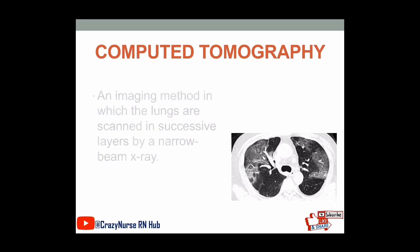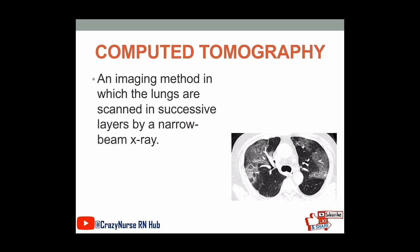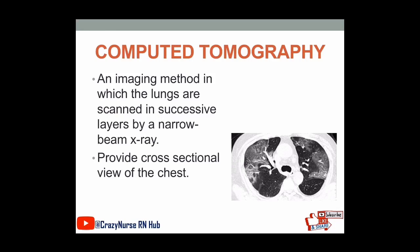Computed tomography is an imaging method in which the lungs are scanned in successive layers by a narrow beam x-ray. It provides a cross-sectional view of the chest, which is more detailed compared to a standard x-ray, allowing the structures of the respiratory system to be seen in greater detail.